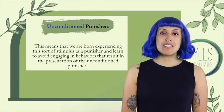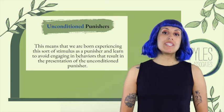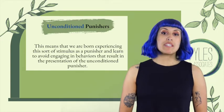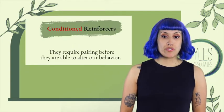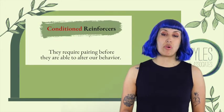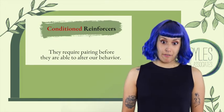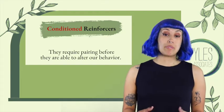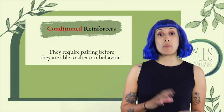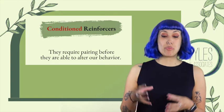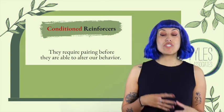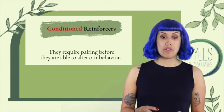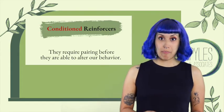In contrast to unconditioned stimuli where we didn't need to have previous learning to occur to respond to them, conditioned reinforcers require pairing before they're able to alter our behavior. For example, a child who starts their life completing puzzles with their parents — their parents being highly reinforcing to them — will learn to contact reinforcement in the future when they put a puzzle together, even if their parent isn't around.